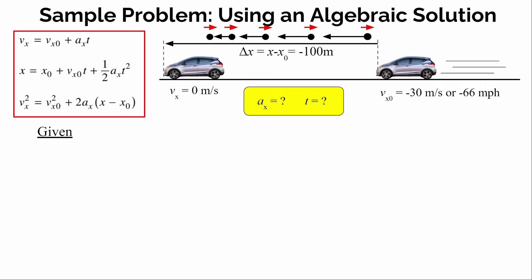Specifically, how much was the car changing its velocity each and every second, and how much time did it take to slow down to a stop? The first step is to write down the given information. In these equations there are five variables: initial velocity, final velocity, displacement (final position minus initial position), acceleration, and time. We'll write down what we know and put question marks for acceleration and time, since those are what we're trying to find. So: initial velocity is negative 30 m/s, final velocity is zero, and displacement is negative 100 meters.